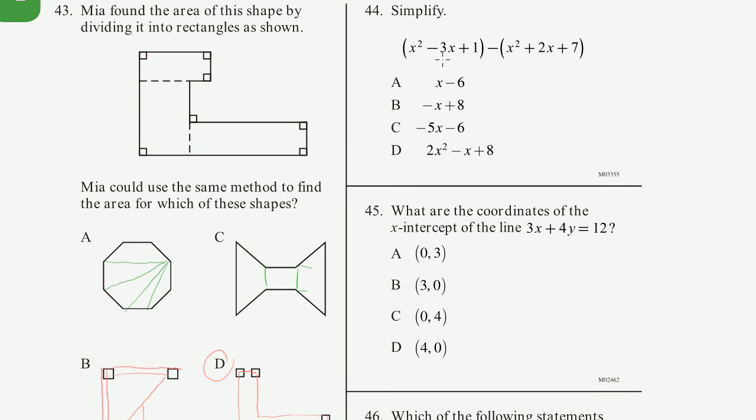44. Simplify. x squared minus 3x plus 1 minus x squared plus 2x plus 7. So let's just write it out. We have x squared minus 3x plus 1.